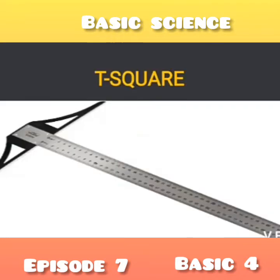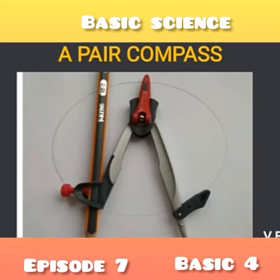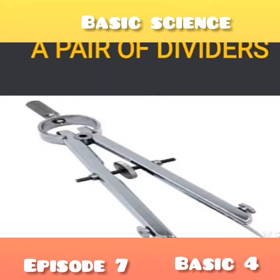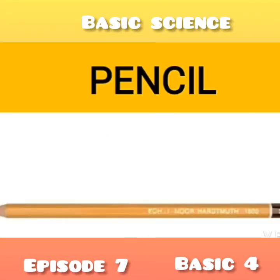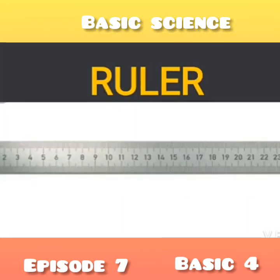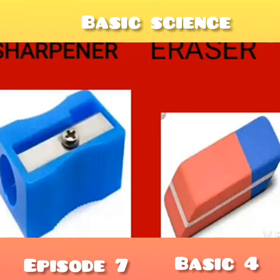Our next instrument is the T-square. We also have a pair of compass, a pair of dividers, pencil, ruler, sharpener and eraser. All these are drawing instruments.